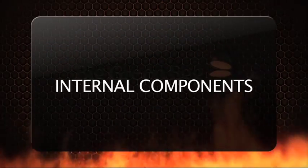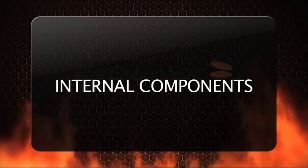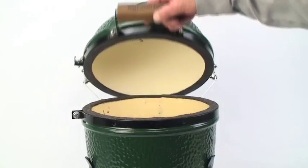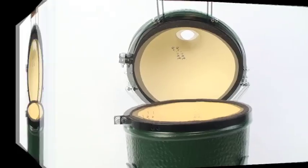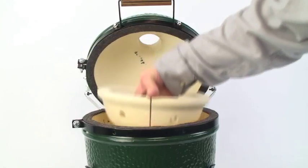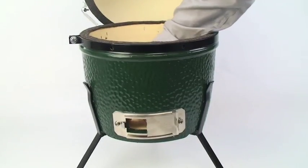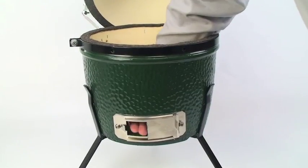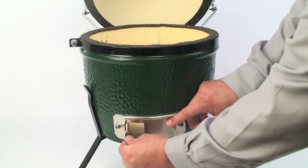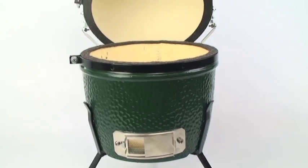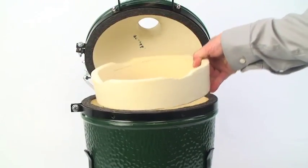It's now time to add the internal components. Slowly lift the dome handle again until the dome is open and remains securely in place. Insert the firebox into the base by reaching through the center of the firebox and using the opening at the bottom as a handle. Be sure the opening at the bottom of the firebox faces the opening of the stainless steel draft door.